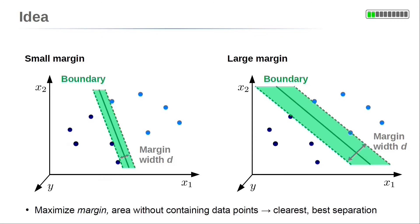The separating boundary is determined by the data. There might be more than one possible separating boundary. On the right side, our original example is sketched again. On the left side, a different separating boundary was selected — this choice leads to a much smaller margin width. It seems very likely that further data points can more easily end up on the wrong side of the separating boundary. Even small variations of the data close to the margin give misclassified data. On the right side, small variations lead to data points within the margin, but less likely on the wrong side. So the clearest separation is for maximal width D of the margin. In the next section, we will derive a cost function which can be used for maximizing the margin.